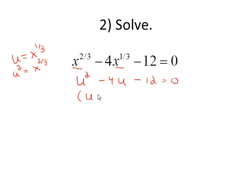Factorable again. u plus 2 times u minus 6 equals zero. Break that into two linear equations that we can solve. u equals negative 2 or u equals 6.